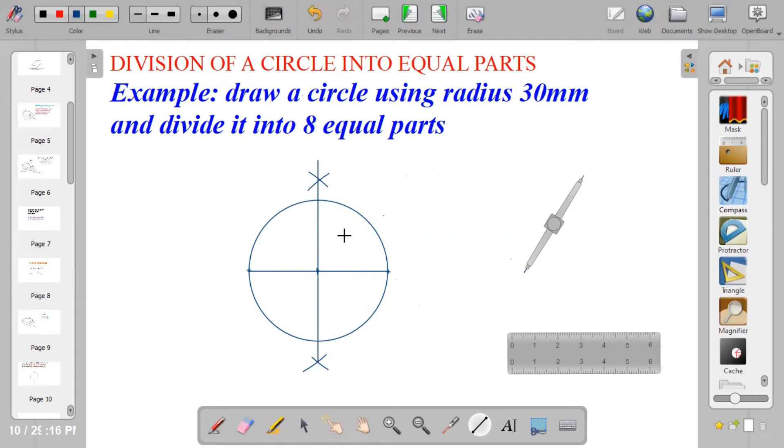You have division 1, 2, 3, and 4. Now, the next thing to do is to bring out your compass and take the radius that is equal to the radius of the circle. Remember, the radius of the circle is 30 mm. So measure radius 30 mm, this is my 30, 3.0 cm.